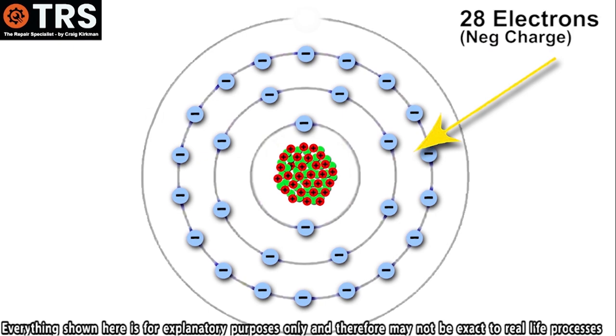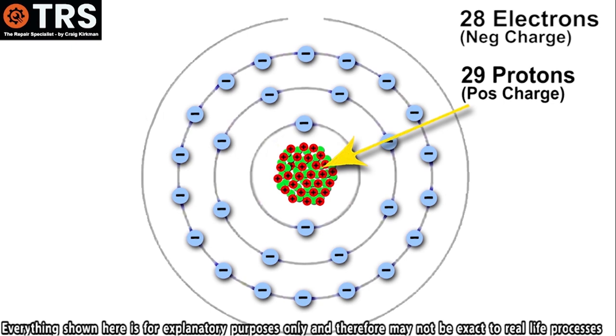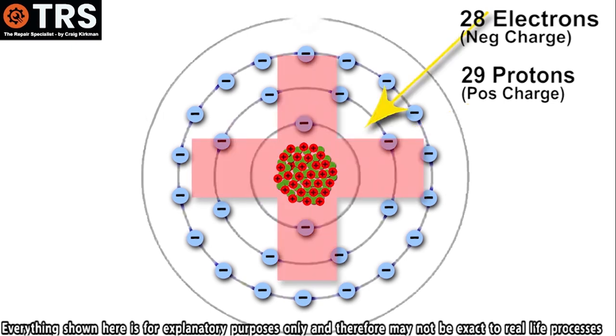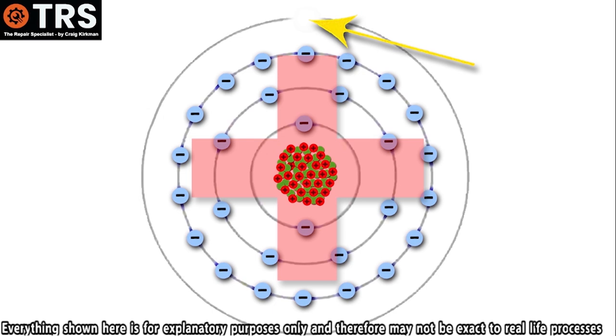But now this particular atom has lost one of its negatively charged electrons. That means it only has 28 negatively charged electrons but it still has 29 positively charged protons. That means the overall positive charge for this particular atom outweighs the negative charge. Because it has lost an electron, whilst that electron is not present, it's no longer called an atom - it's called an ion. Because the overall charge is positive now, it's called a positive ion.